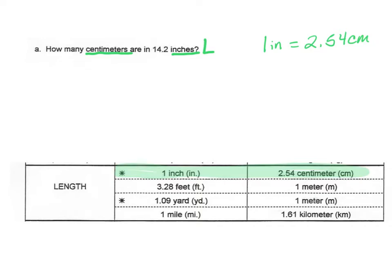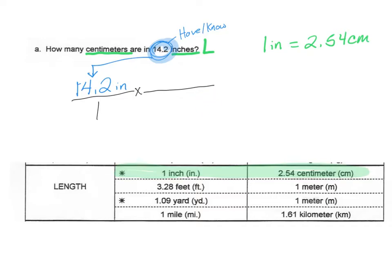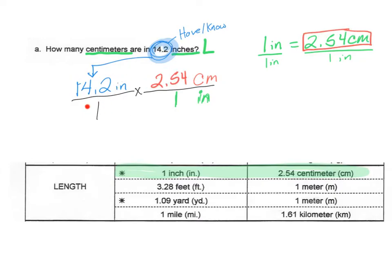We start with what we know: 14.2 inches. We make that into a fraction by writing it over 1. Then we multiply by a conversion factor, making sure units cancel. We have inches on top, so we put inches on the bottom and centimeters on top. The 1 stays with the inch and 2.54 stays with the centimeter. So: 14.2 inches over 1 times 2.54 centimeters over 1 inch gives us 36.068 centimeters. The inches cancel out and our answer is in centimeters.